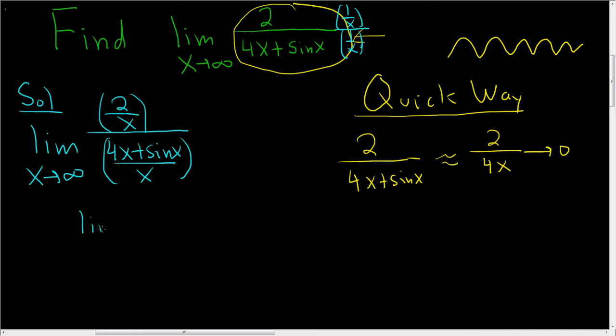So this is the limit as x approaches infinity of 2 over x, and on the bottom here we have 4x over x. Well, 4x over x is 4, and plus sine x over x.